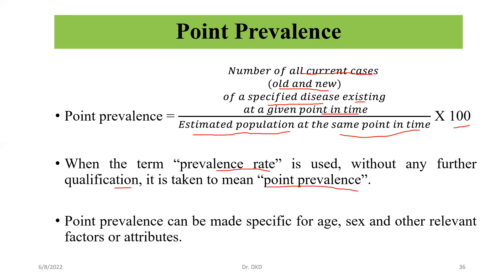Point prevalence can be made specific for age, sex, and other relevant factors or attributes. Now we need to understand about period prevalence.